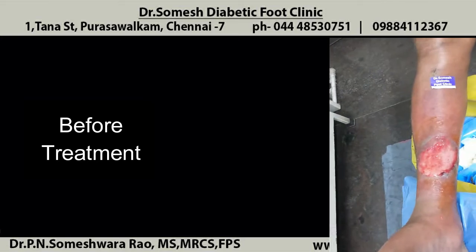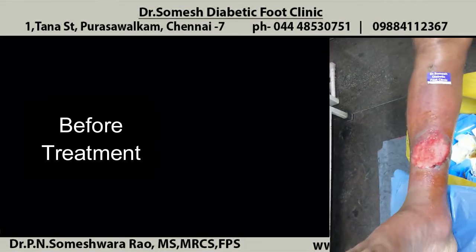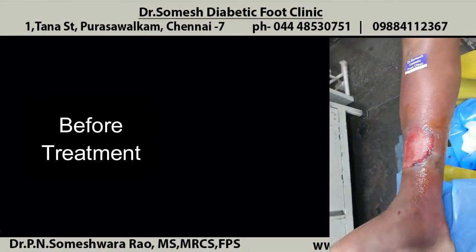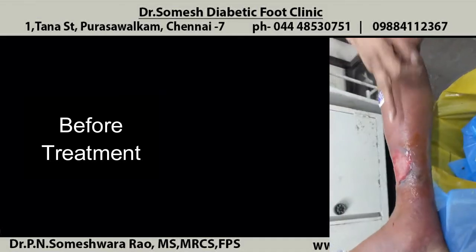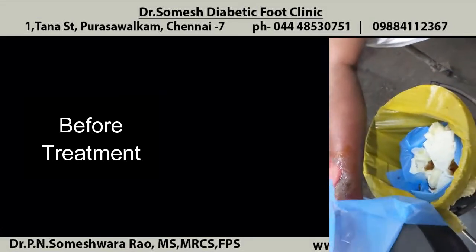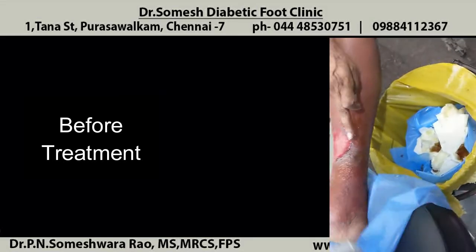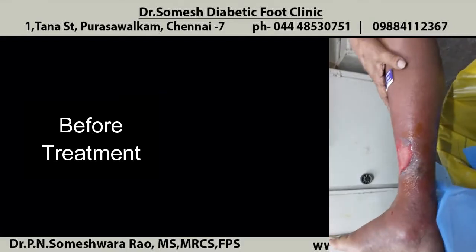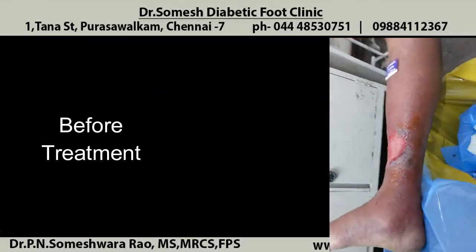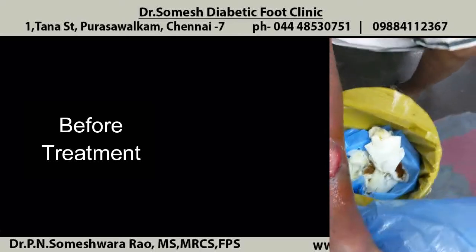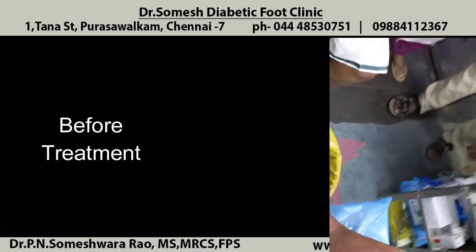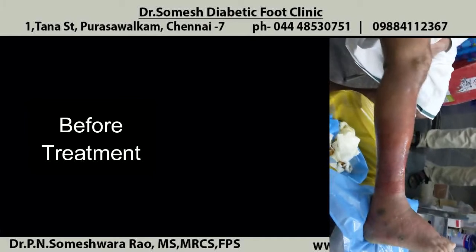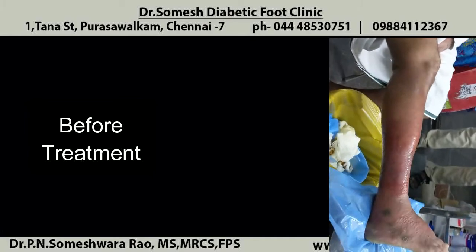The patient came with a blister which has de-roofed. Surrounding erythema you could see. Compared to the knee level, you can see the erythema extending to the entire leg except for the upper part at the knee level. In other areas, everything is swollen and erythema is present, compared to the foot and the knee level.